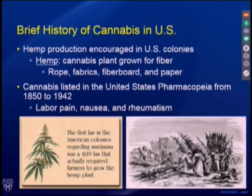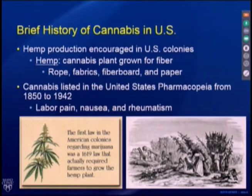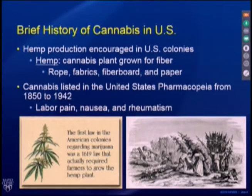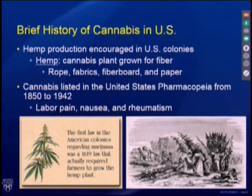A brief history of cannabis in the United States: hemp production — hemp is a type of fiber-rich cannabis plant — was really grown and encouraged in the U.S. colonies because it had high fiber content, and could be used for ropes, fabrics, fiberboard, and paper. Cannabis has been listed in the U.S. Pharmacopoeia from 1850 to 1942, indicated for labor pain, nausea, and rheumatism.